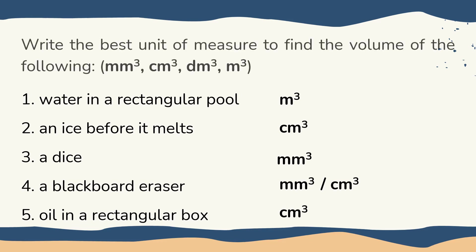So example natin, anong gagamitin nating unit? Choices are cubic millimeter, cubic centimeter, cubic decimeter, and cubic meter. What unit for water in a rectangular pool? Mas maigi gamitin natin ang cubic meter kasi malaki yung pool. And ice before it melts — dahil maliit lang naman yung ice — cubic centimeter, or pwede rin cubic millimeter. How about the dice? So yung dice, sobrang liit, so cubic millimeter. A blackboard eraser — kaya hanggang kahawakan ng kamay — so pwede na cubic millimeter or cubic centimeter. How about oil in a rectangular box? Pwede na yung cubic centimeter.